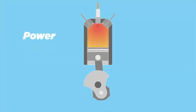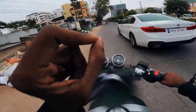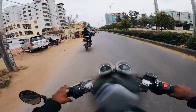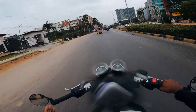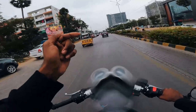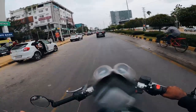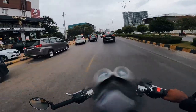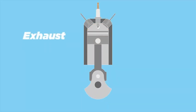The third stroke is the power stroke — the ignition fires the spark. The spark is generated at around 22,000 volts by the magneto coil. The piston is pushed down and power is generated via the crankshaft. The fourth stroke is the exhaust stroke — you exhaust the gas out.